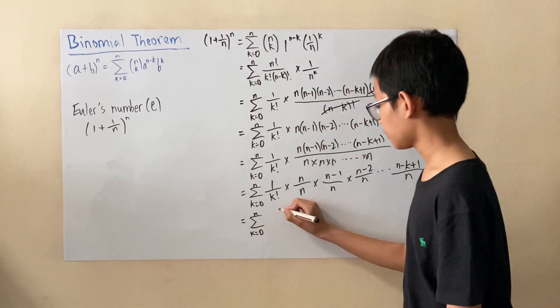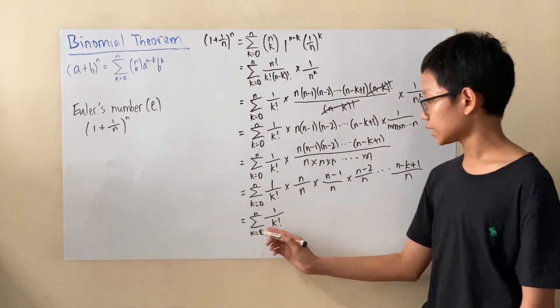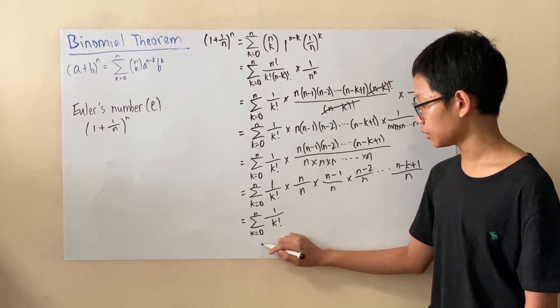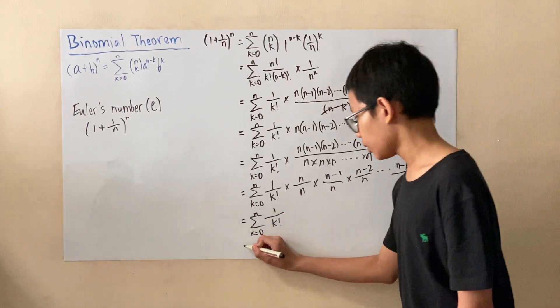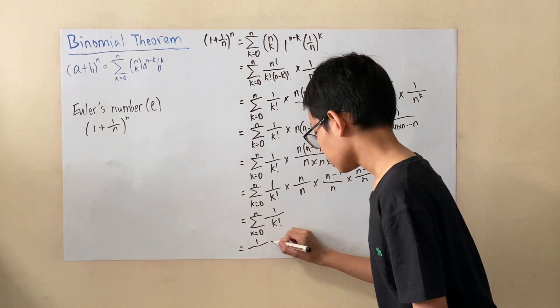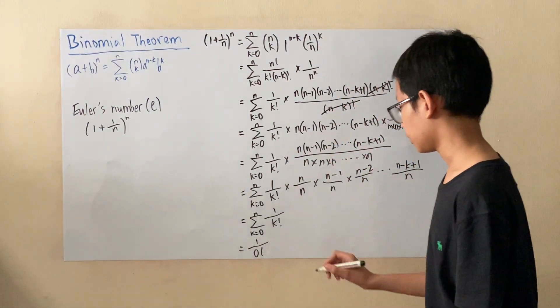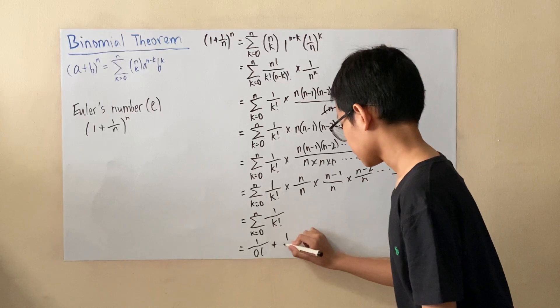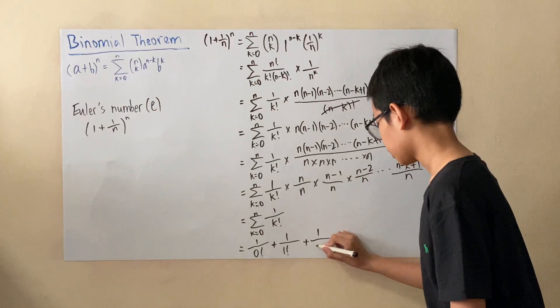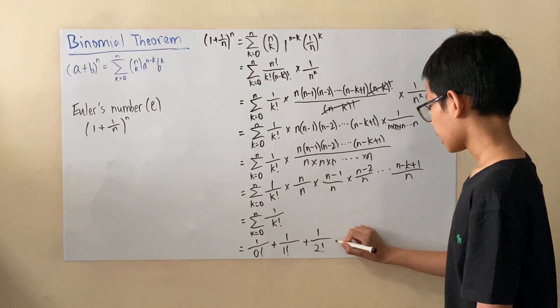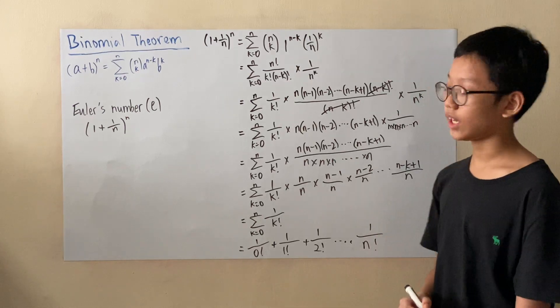So what we'll have left is the sum of all terms where k equals 0 all the way to k equals n. So what this basically means is first, we'll take k as 0, so we'll have 1/0! plus 1/1! where k equals 1, plus 1/2! where k equals 2, and all the way until k equals n, so until 1/n!.